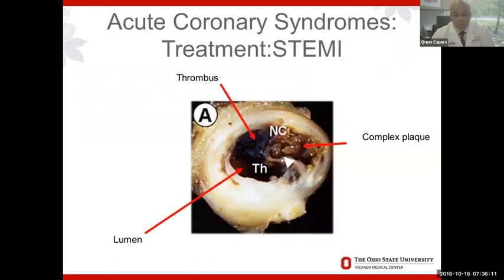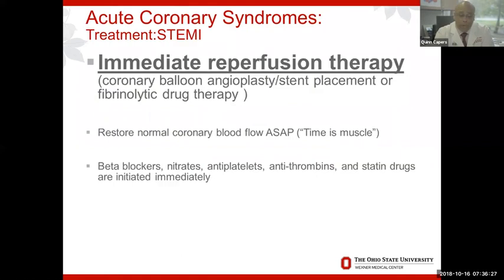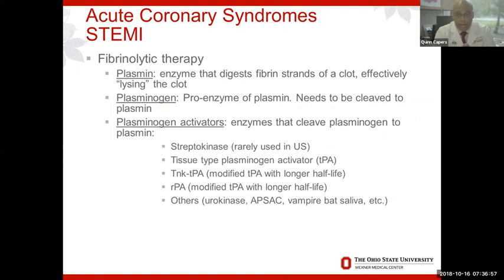This cross-section again shows thrombus on the lumen side and complex plaque underneath the fibrous cap. How do we treat the STEMI? Immediate reperfusion therapy — two ways: fibrinolytic drugs, or mechanically with balloon angioplasty and stenting. Either way, as we say in interventional cardiology, time is muscle. We need to open that artery as soon as possible while simultaneously giving beta blockers, nitrates, anti-platelets, and anti-thrombin medications.